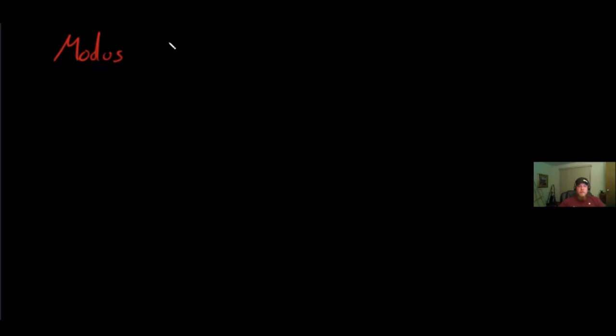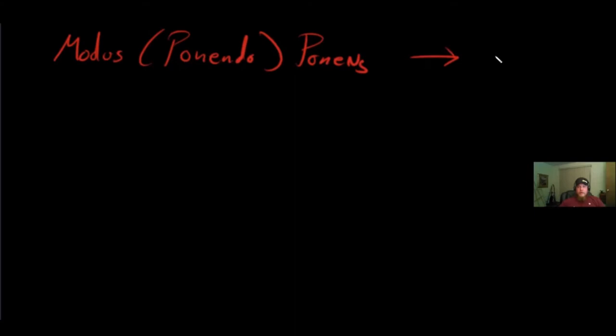Let's look at the first thing we can do with arrows and conditional statements. The first rule I'm going to introduce is called modus ponens, or sometimes modus ponendo ponens — a Latin phrase meaning 'mode that affirms by affirming.' I'm going to refer to it as arrow out.